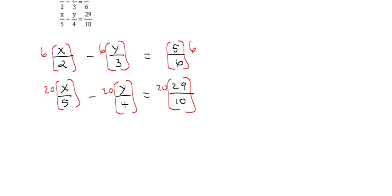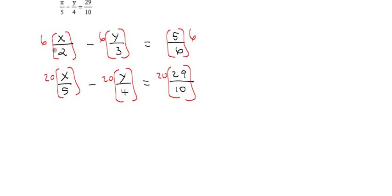Alright, and so when we do that, the 2 goes into 6 three times, so we have 3x. 3 goes into 6 two times, so we've got minus 2y. The 6 is canceled, so we just have 5.